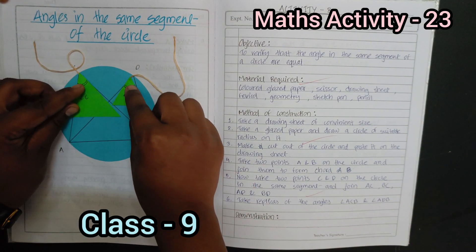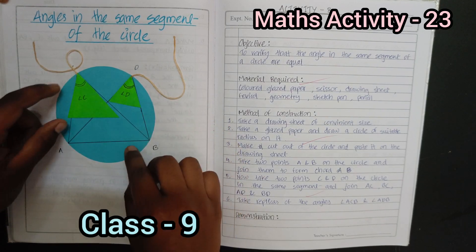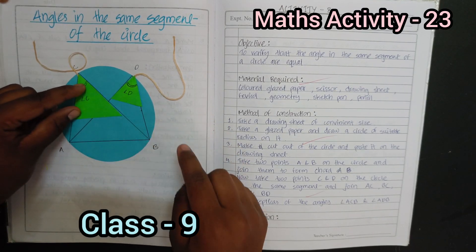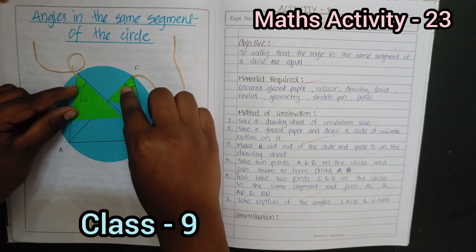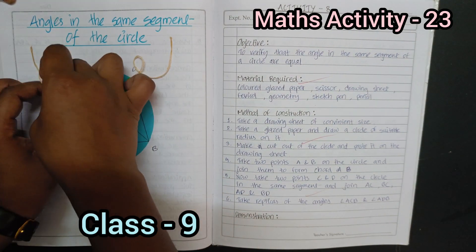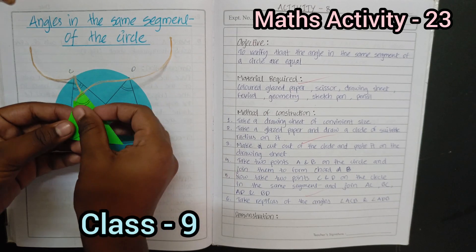First angle ADB and second angle ACB. As we observe that these two angles are equal to each other.